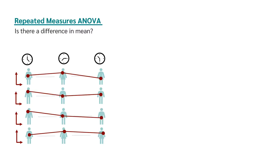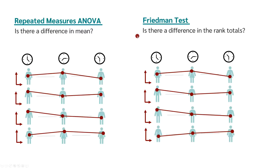But what is the difference between the two tests? The analysis of variance tests the extent to which the measured values of the dependent sample differ. In the Friedman test, on the other hand, it is not the actual measured values that are used, but the ranks. The time where a person has the highest value gets rank 1, the second highest gets rank 2, and the smallest value gets rank 3.